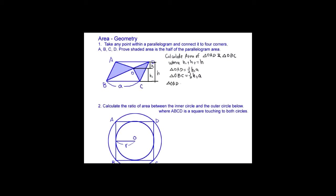If you add them together, it's going to be H1 plus H2 A which is H A. So this is the half of the parallelogram area.